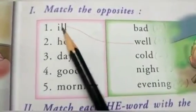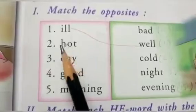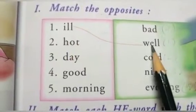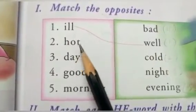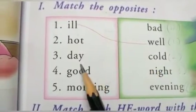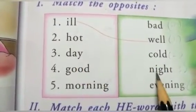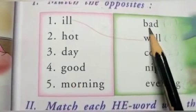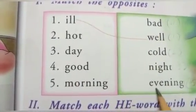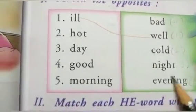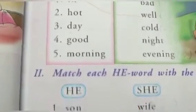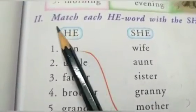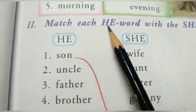These are opposite words and you have to match them. One is done here — ill matches well. Second one: hot matches cold, day matches night, good matches bad, morning matches evening. You have to do this in your notebook. Next one: match each 'he' word.